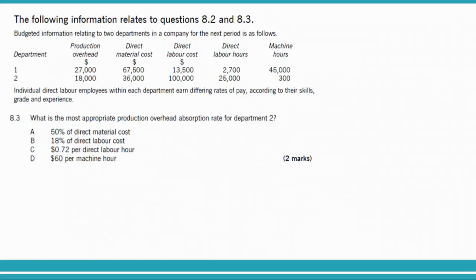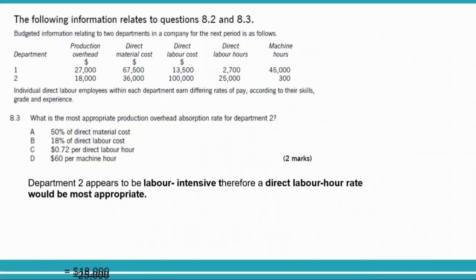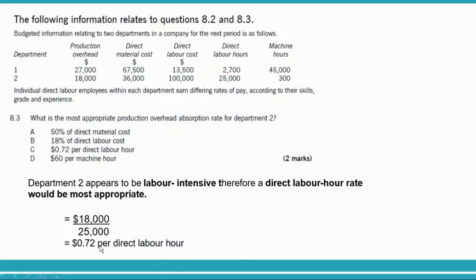For question 8.3, using the same data but for department two: overheads are $18,000. Again we choose whichever hours are more between machine hours and labor hours. In department two, labor hours are greater, so: $18,000 divided by 25,000 direct labor hours equals $0.72 per direct labor hour. The answer is option C.